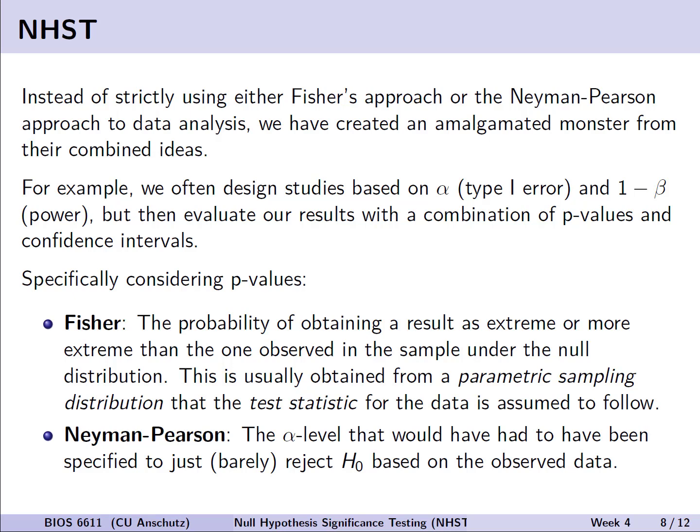For examples, we often design studies based on considering things like alpha, or the type 1 error, and 1 minus beta, or the desired power. But then we evaluate our results on the back end, like Fisher would, with a p-value of some sort, and then maybe confidence intervals like Neyman and Pearson suggested.